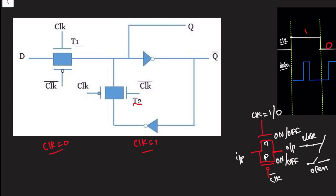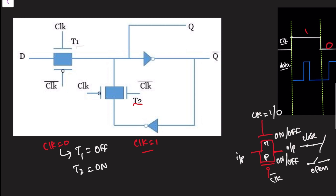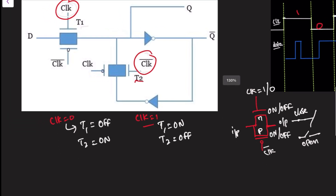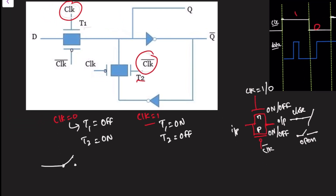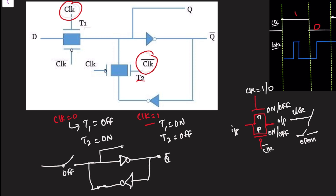Knowing closed and open switch behavior, we can redraw the same diagram. When clock is zero, T1 will be off because for the NMOS here clock-bar is given and here clock is given. T2 will be on. So we can draw the equivalent: T1 is an open switch, followed by one inverter and then another inverter, and T2 is a closed switch. Here it's Q-bar, here it's Q, and here it's the input.